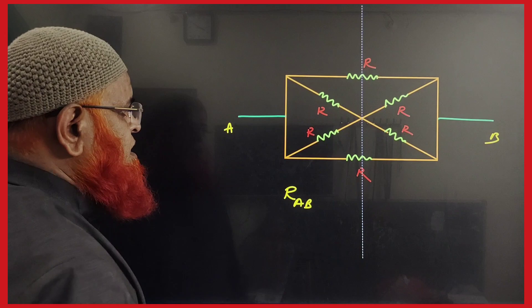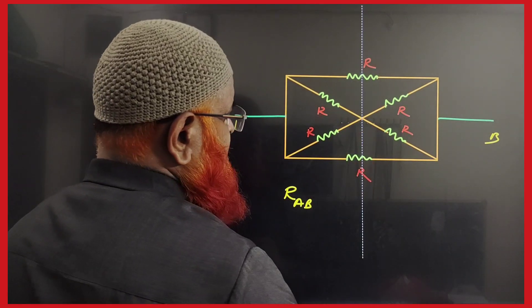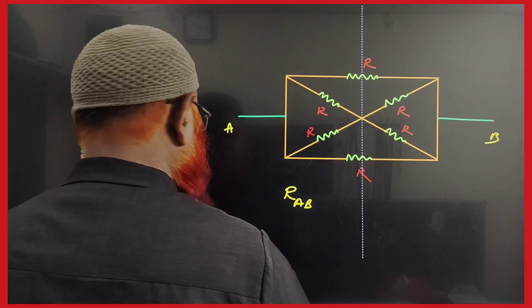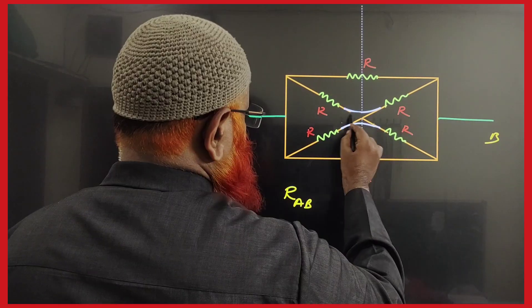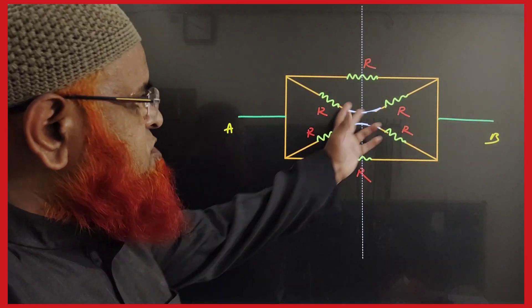What does symmetry mean here? Whatever line comes in the middle should be disconnected. Whenever symmetry comes, what should you do? These two lines you have to join, and these two lines you have to join. Now you can solve easily.